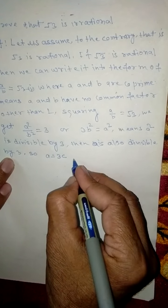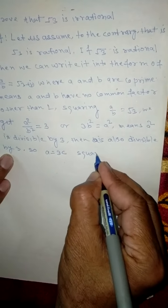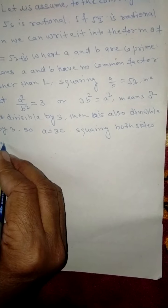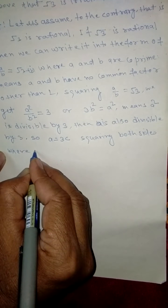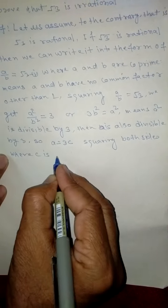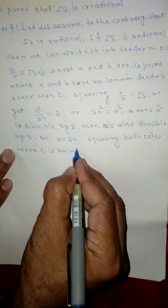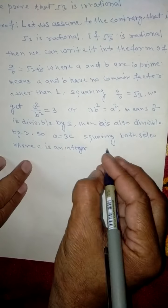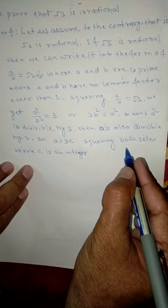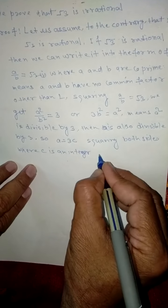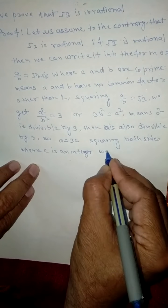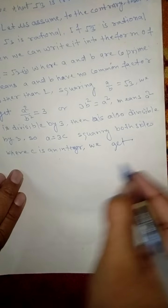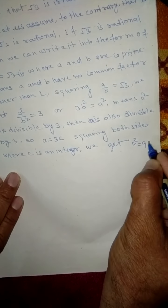Squaring both sides, where C is an integer, we get A square is equal to 9C square.